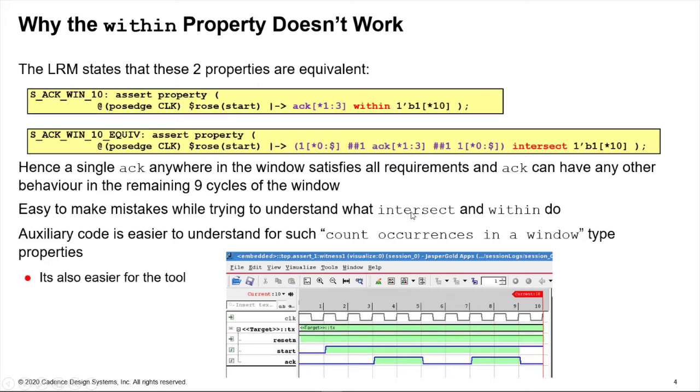And throughout. And for such problems what's often easier and less error prone and easier for formal tools to process is if you use auxiliary code which is just helper code there to make it easier to write properties. So this auxiliary code looks like SystemVerilog RTL and it has to be for the tool, but it's there just for verification.